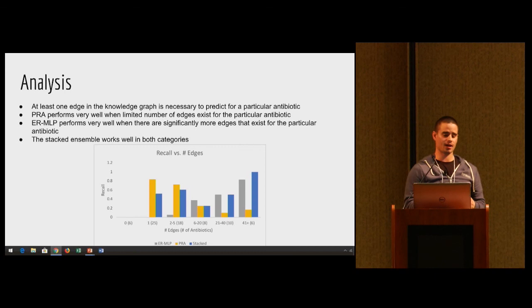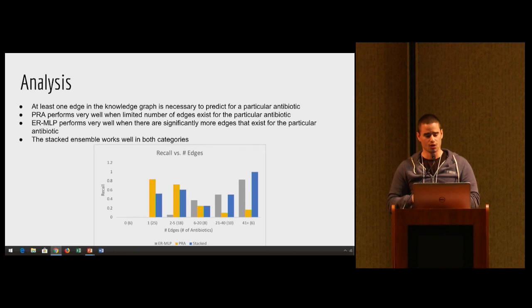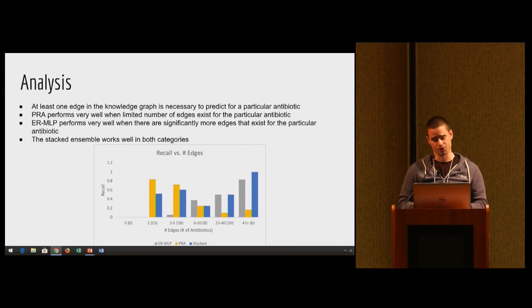If you look at each individual antibiotic that we're actually predicting on, and you look at the actual edges that are in our knowledge graph that we're training on, and you look at how many edges of that antibiotic exist, you'll see that of the antibiotics that exist in our test set that have no edges to train on in our knowledge graph - zero edges, just an orphan node - none of the models were able to predict on them. That's because there was nothing to really train on. So none of them could actually predict on six of the antibiotics in our test set.